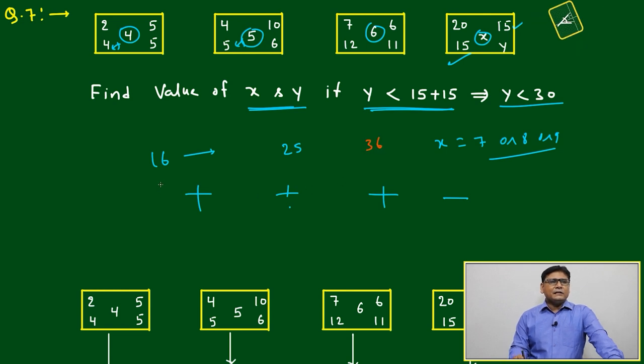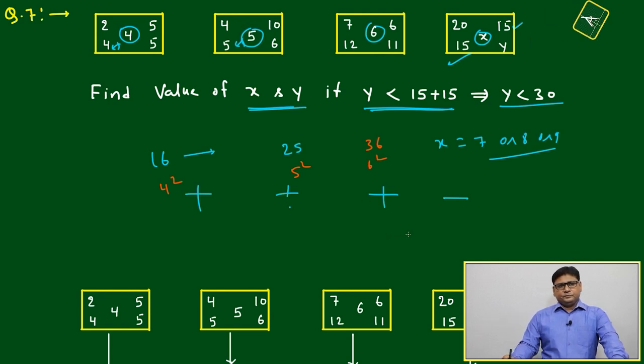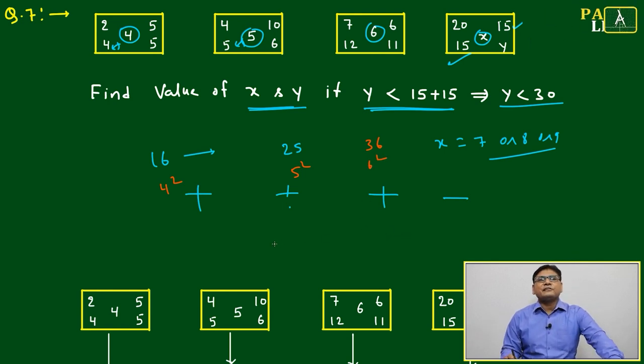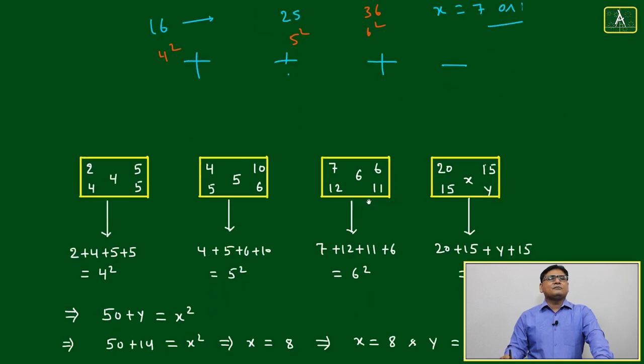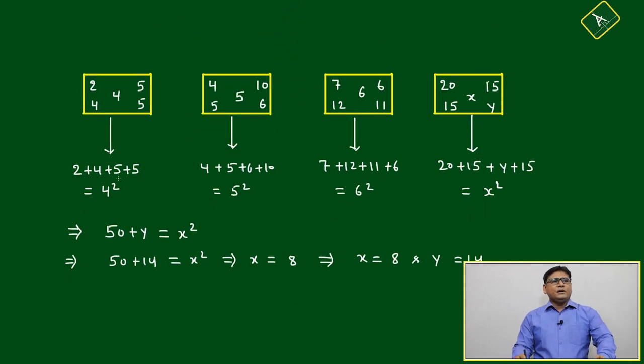Now I think it's very clear—we are following the pattern of perfect square numbers. The center number is 4 square, 5 square, 6 square. Then here, we'll add all the numbers and check which is the best possibility.